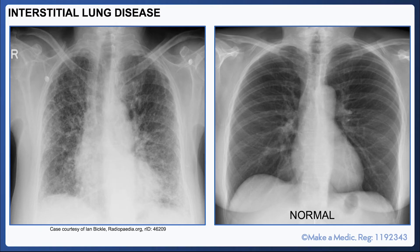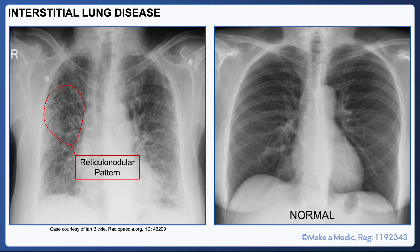Interstitial lung disease is a group of diseases characterized by scarring of the lung tissue. It classically gives rise to a reticulonodular appearance — a radiographic term that refers to a combination of looking nodular, i.e. the presence of small nodules, and looking reticular, i.e. looking like a net. The changes may be widespread or may predominantly affect a certain region.